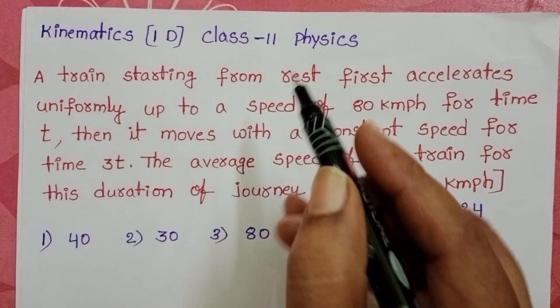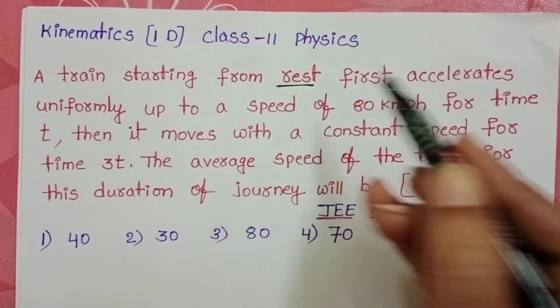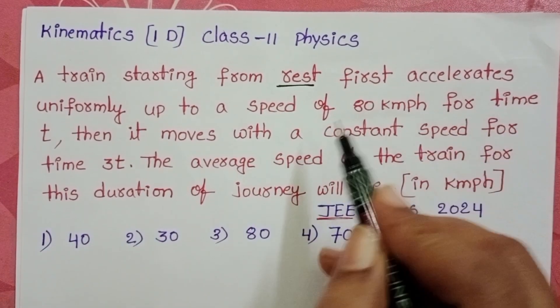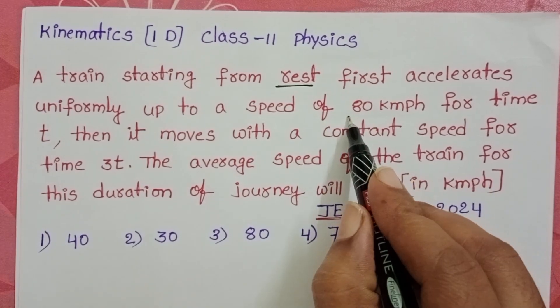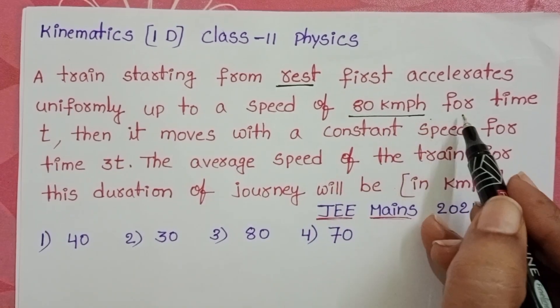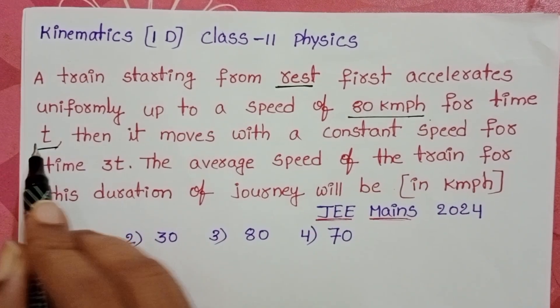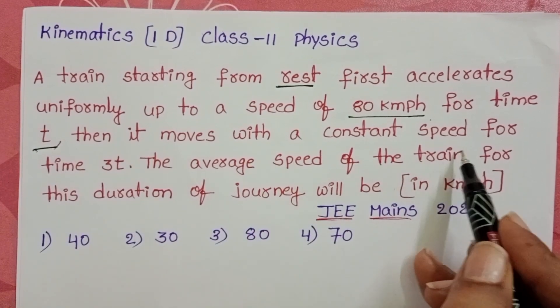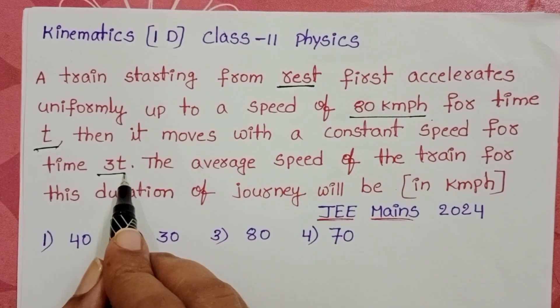A train starting from rest first accelerates uniformly up to a speed of 80 km per hour for time t. Then it moves with a constant speed for time 3t.